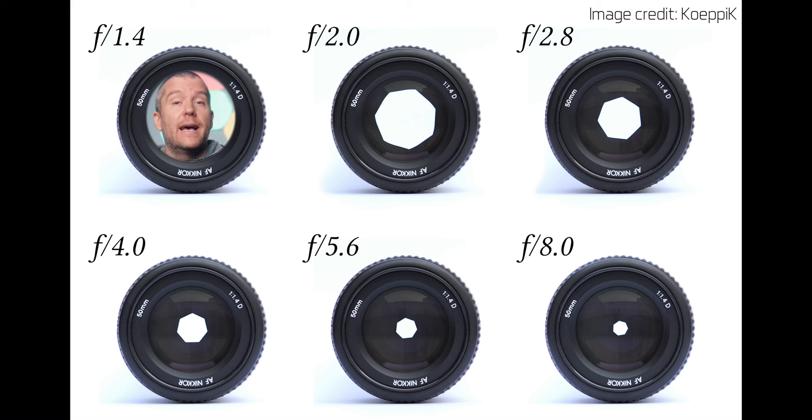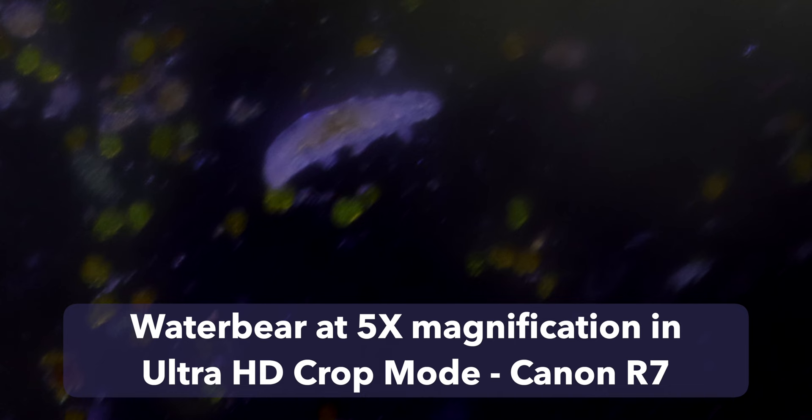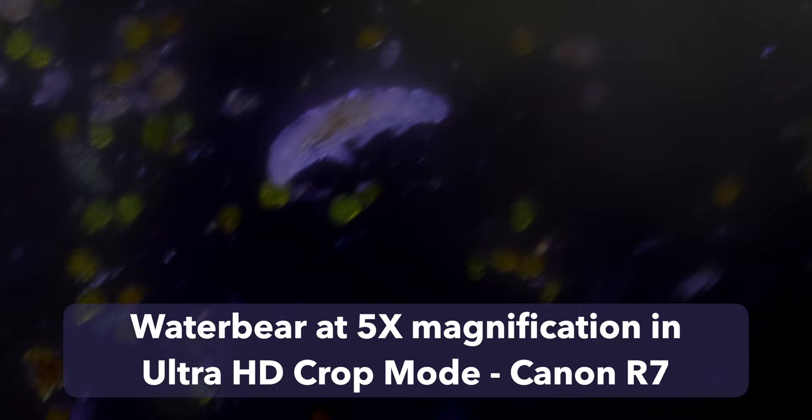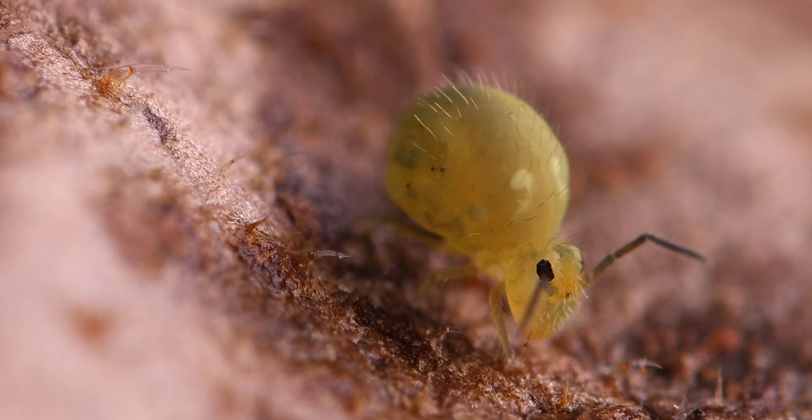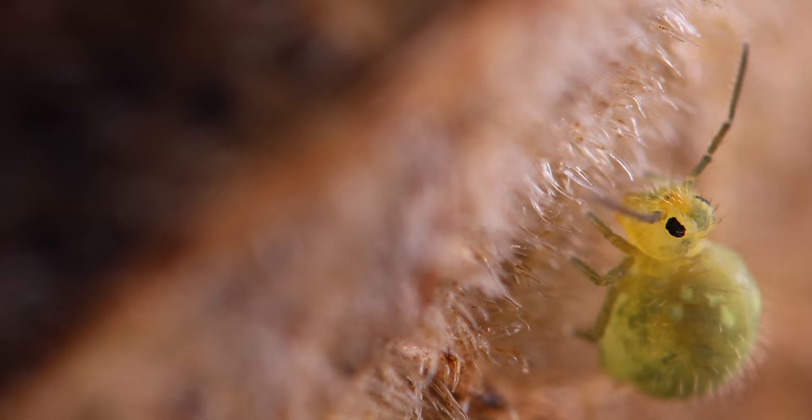The third and probably one of the most important factors you need to take into consideration is how your lens performs optically when you shoot at narrower apertures. As a general rule of thumb, the narrower the aperture and the higher the magnification ratio, the higher the diffraction, which will result in decreased sharpness primarily due to massive loss of light. This is when you have to find the most optimum aperture that will still provide you with enough depth of field without compromising image quality and sharpness.